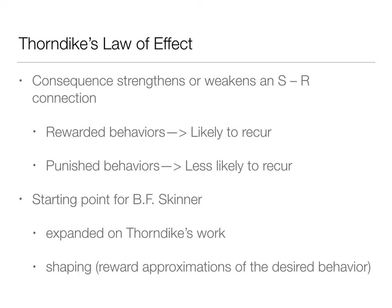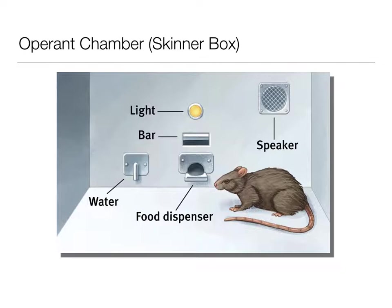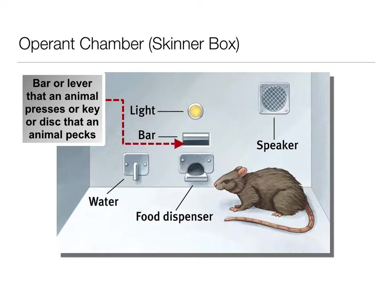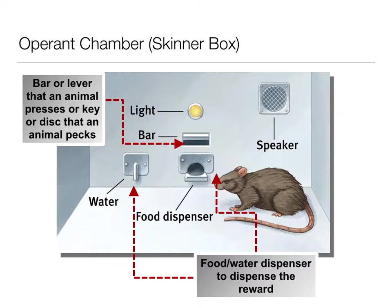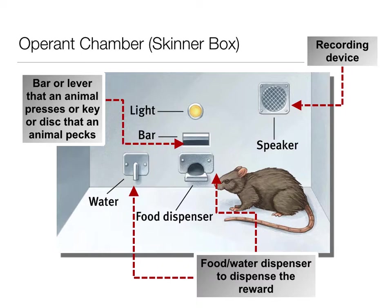Skinner expanded upon Thorndike's work and added shaping. While Thorndike had puzzle boxes, Skinner had his Skinner Box, or operant chamber. He did a lot of research with rats, and the typical setup had a bar or lever the animal could press — or peck, since he also worked with pigeons. This behavior was often found by chance: they'd accidentally press the bar or peck the disc, and then receive a reward like water or food, making those behaviors more likely to happen again. A recording device measured these observable behaviors.